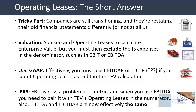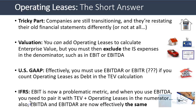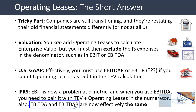Under IFRS, you have less of a choice — you pretty much have to count operating leases as debt. So anything where total enterprise value is in the numerator will have to include operating leases, and you need to pair it with a metric like EBITDA or EBITDAR, because both of those completely exclude the operating lease expense since they exclude interest and depreciation.